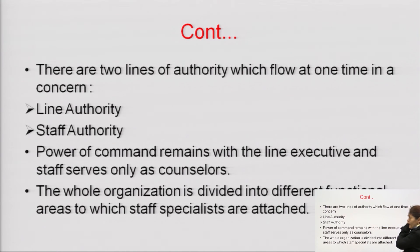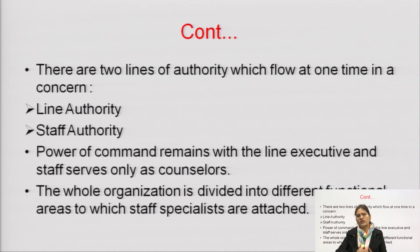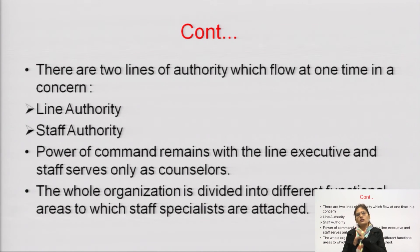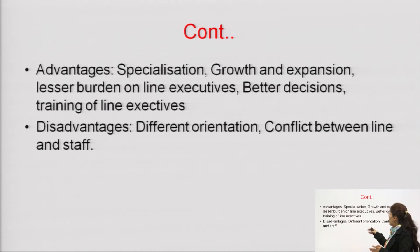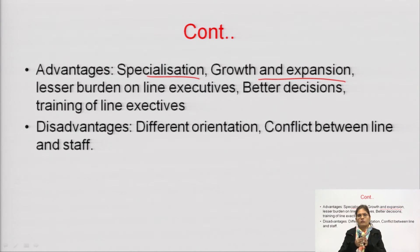Division of work and specialization take place in line and staff organization. In this hierarchy, there is specialization — for example, if a department is HR, all people will be HR-specialized. There are two lines: line authority and staff authority. Power of command remains with line executives; staff serves only as a counselor — just to advise line officers. Ultimate approval is given by line executives. The whole organization is divided into different functional areas with attached specialists.